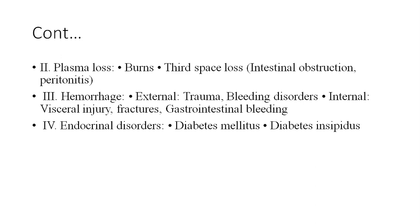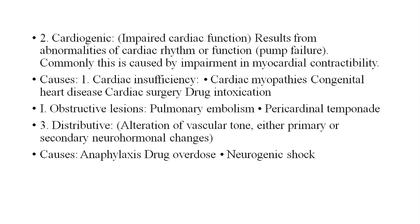First is diabetes mellitus and diabetes insipidus. Cardiogenic: impairment in cardiac function results from abnormality in cardiac rhythm or function. This is commonly caused by impairment in myocardial contractility. Causes of cardiogenic impairment include cardiac insufficiency, cardiac myopathies, congenital heart disease, and drug intoxication.